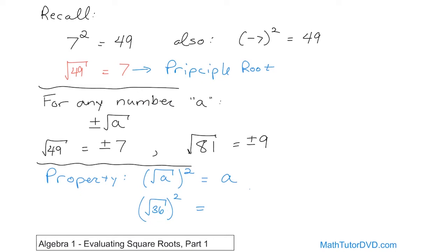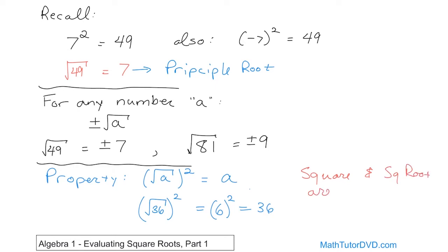What is the square root of 36? Six times six gives you 36, so the inside is equal to 6. But we're squaring the answer, so we get back 36 again. So when you take the square root of something and then square it, you get back your original thing. Squares and square roots are opposites.